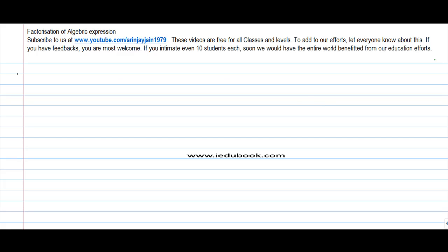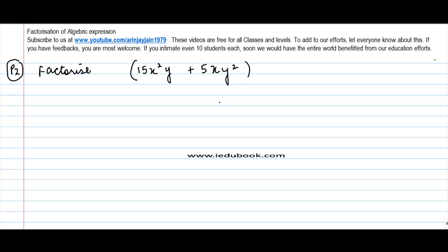Let's take problem 2 on factorization through common factors. You are told to factorize 15x²y plus 5xy². If you see these two, even before doing anything else, you can find out that there are certain numbers which are common. For instance, x is common in both of them and y is common in both of them, of course with different powers. Let's try to solve this out.